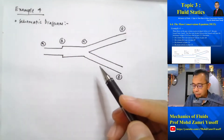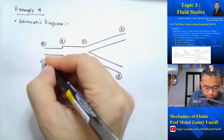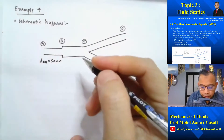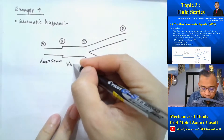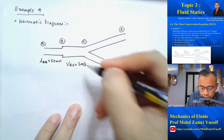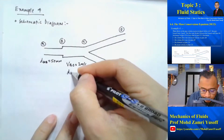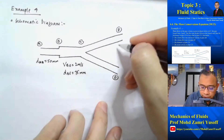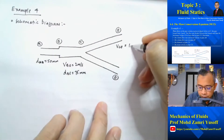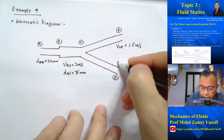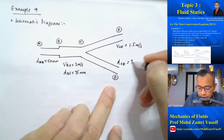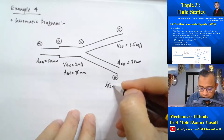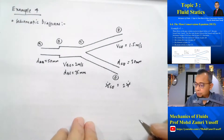Let's consider the schematic diagram. The diameter of pipe AB is equal to 50 mm. The velocity in pipe BC is equal to 2 m/s, and the diameter of pipe BC is equal to 75 mm. The velocity in pipe CD is 1.5 m/s, and the diameter of pipe CE is given as 30 mm. The discharge in pipe CD is equal to twice the volume flow rate in pipe CE.